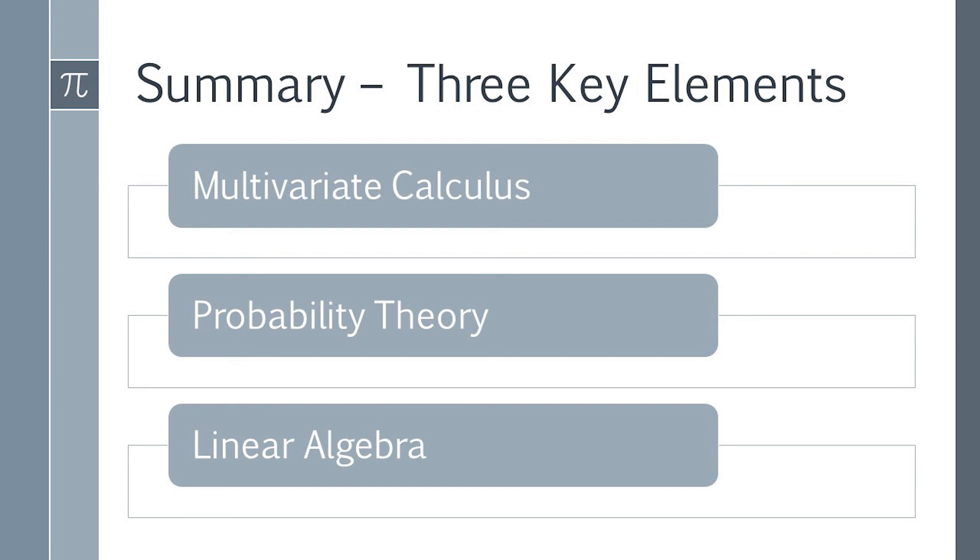Second, you have to know probability theory as machine learning is based in statistics. So understanding statistics and probability theory is going to help you understand why and how these algorithms are going to be used. Finally, linear algebra is necessary as most of the inputs and outputs and algorithm structure itself is going to use linear algebra.